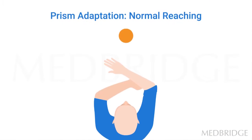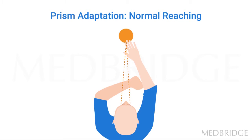What happens during prism adaptation is this. Under normal conditions of reaching, the visual spatial map that we have in our representation and the proprioceptive map that we have of the world are aligned, so that when the person sees an object and reaches for it, the hand is able to go directly straight to the object.